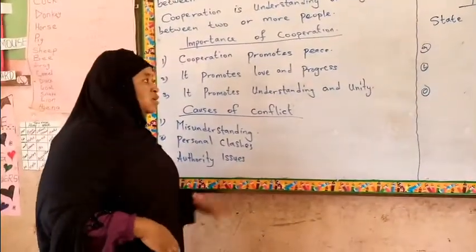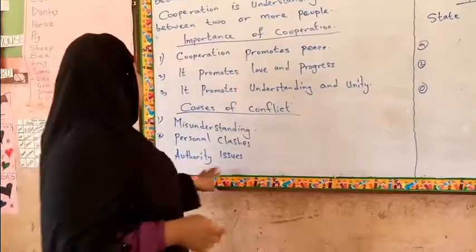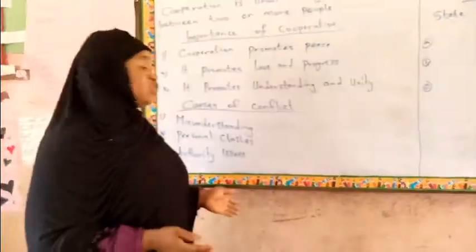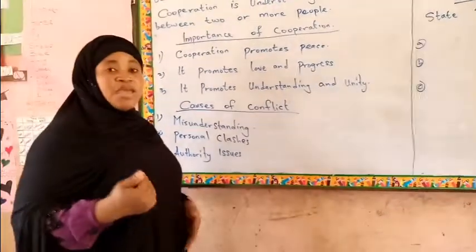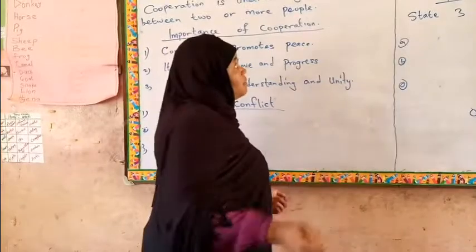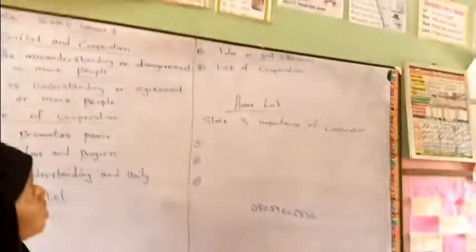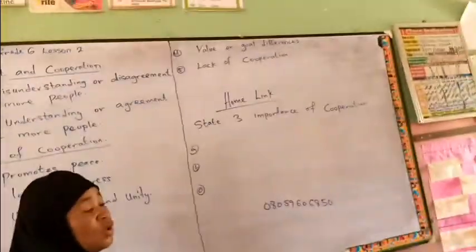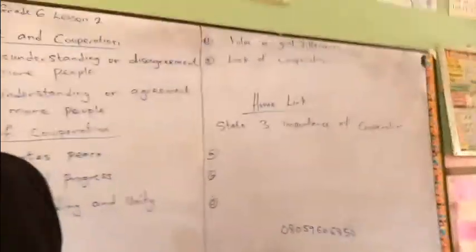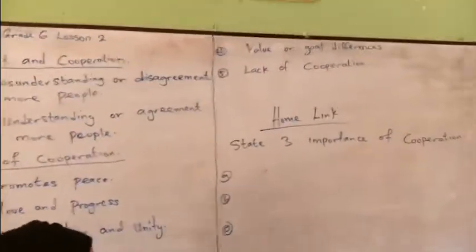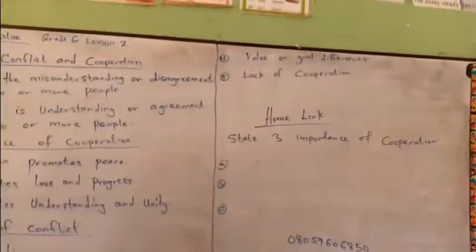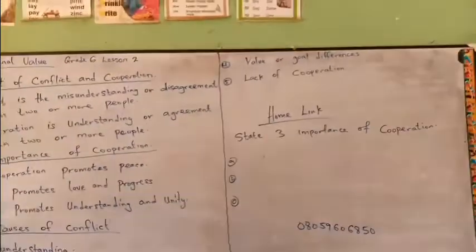Three: authority issues. These are issues like the school authority might have issues with the government, or a teacher might have issues with the school management. Four: values or goal differences — we all have different values and goals. Five: lack of cooperation. If we don't cooperate, we cannot move forward.